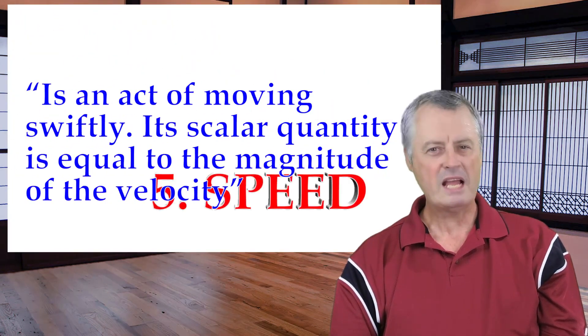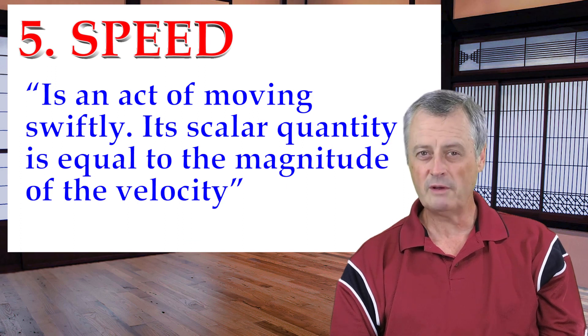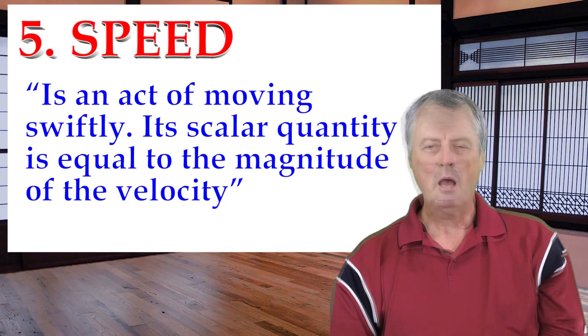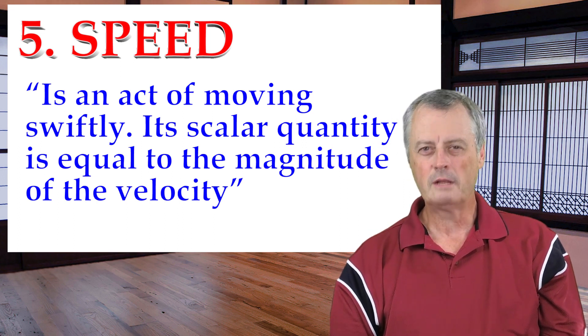Number five is speed. Speed is the act of moving swiftly; its scalar quantity is equivalent to the maximum velocity that can be attained. A major mistake often made in studying speed is that people don't realize it's more than just the body — the mind has to make sure the body moves quickly enough to execute whatever technique or attack you're trying to accomplish. It also has a sympathetic relationship with the reflexes as discussed earlier. There are many aspects such as types of speeds, characteristics to promote speed, and situational speed that we will cover in depth another time.